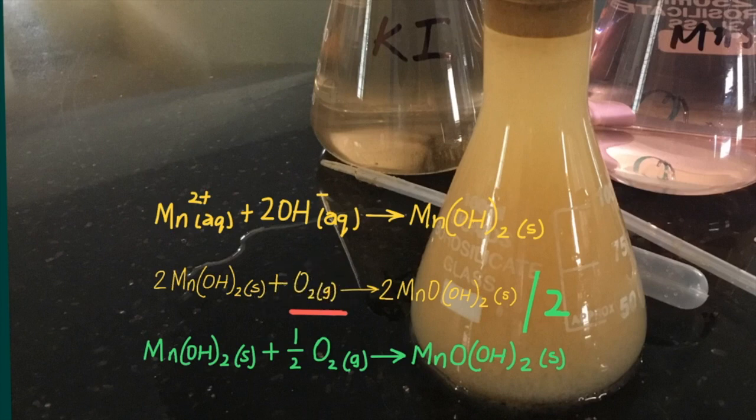or fixes all of the oxygen in the sample as this precipitate, and here we divide this equation by two to simplify the calculations later on, showing that half a mole of oxygen is used to produce one mole of this precipitate.